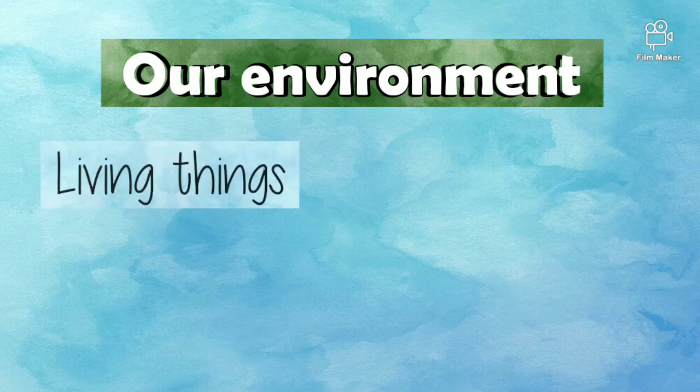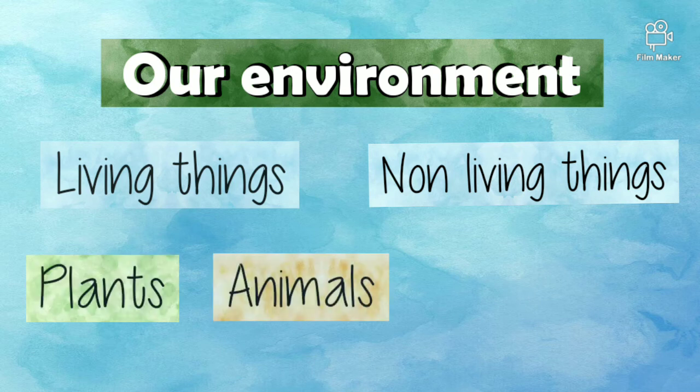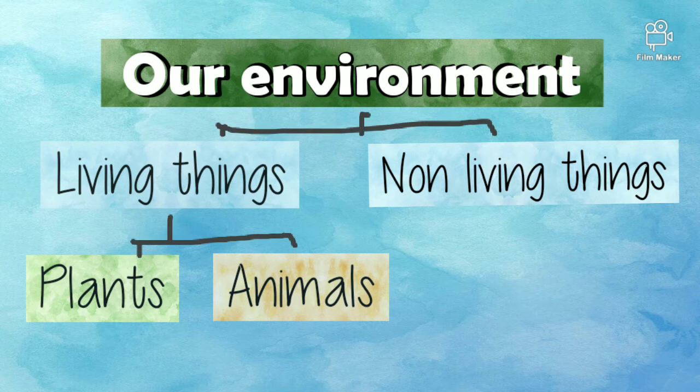The sparrow is a living thing and the stone is a non-living thing. Things in our surroundings form two groups: living things and non-living things. Living things are of two kinds — plants and animals. Animals have babies and seedlings grow from seeds; the seedlings then grow into plants. This tells us that plants are living things too.